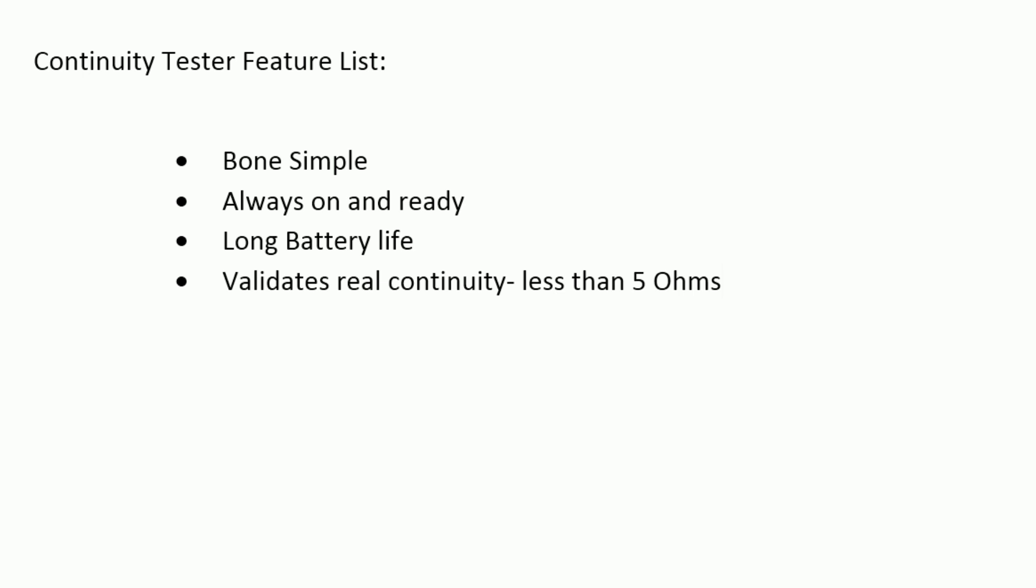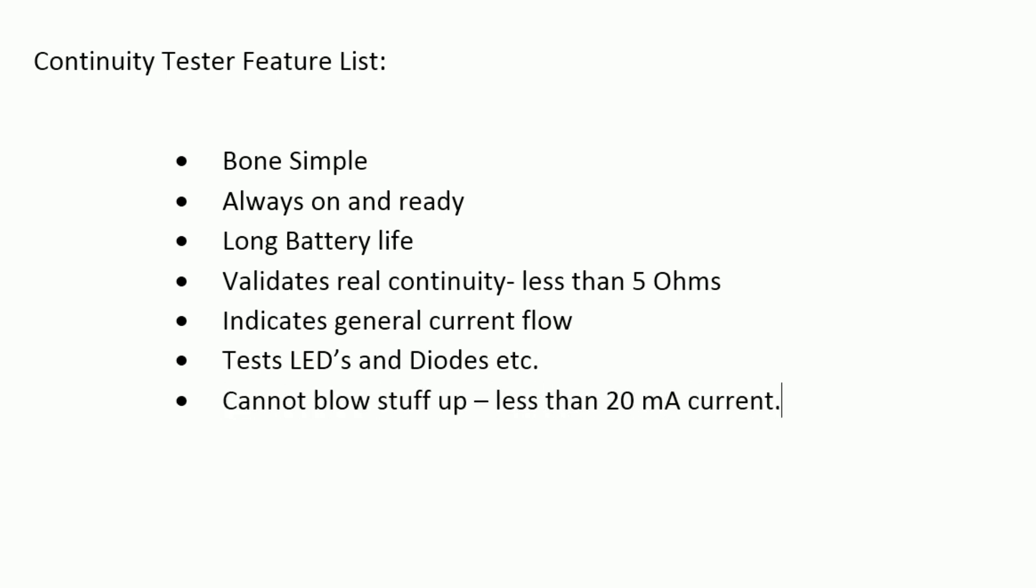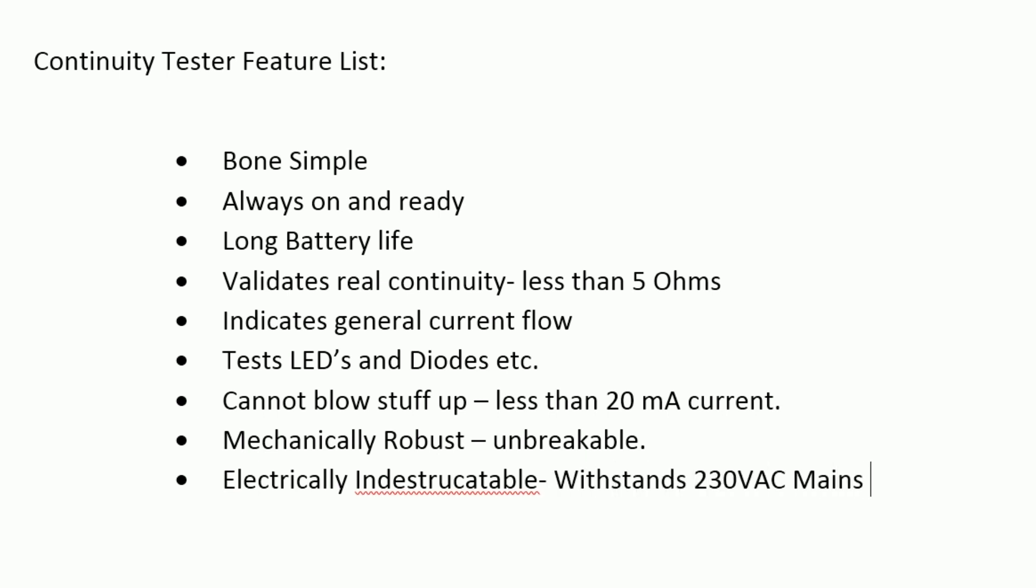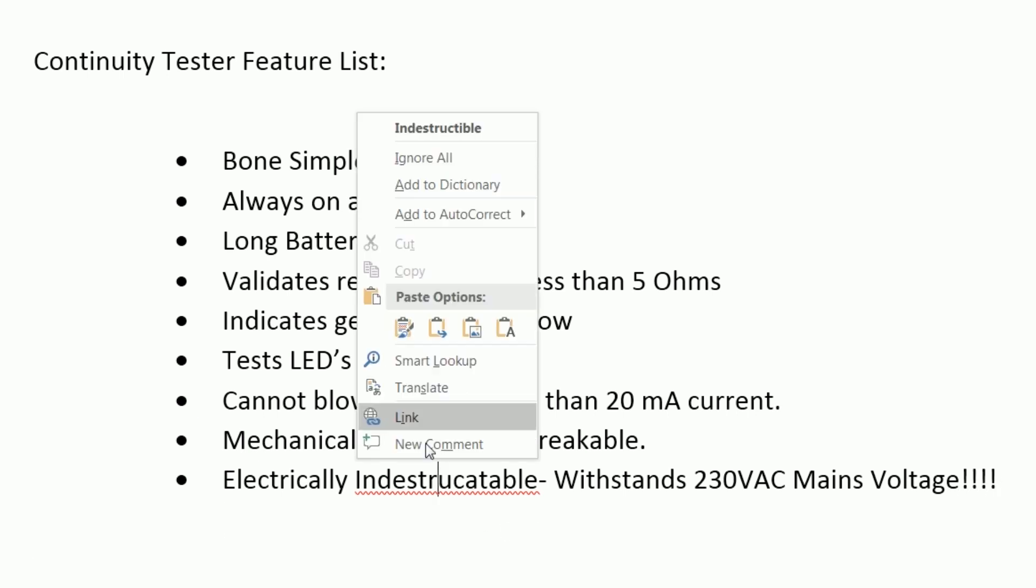It's got to validate real continuity and that means less than 5 ohms. I have no idea why people think that 50 ohms is continuity. It should indicate general current flow so even if it's not official continuity I can still tell there's some current flowing. It needs to test LEDs and diodes without too much trouble. It should never blow anything that I'm testing up. That means its maximum current should be less than 20 milliamps. It should be really mechanically robust so I can knock it around without worrying about breaking it. And probably most difficult of all it has to be electrically indestructible. I need to be able to stupidly poke this thing on 230 volts mains voltage and know that it's not going to get blown up. That's the only way this thing will last a lifetime.